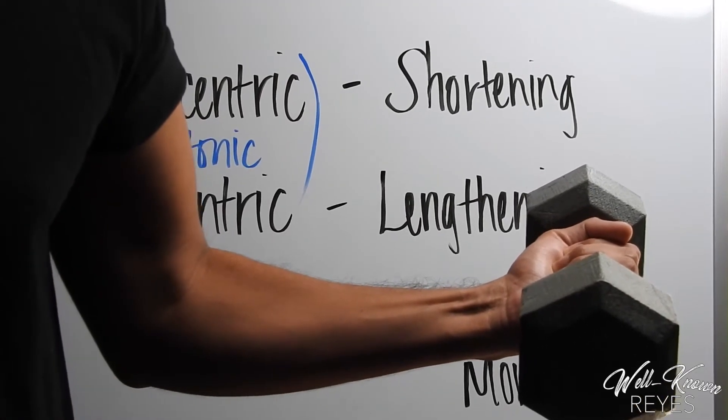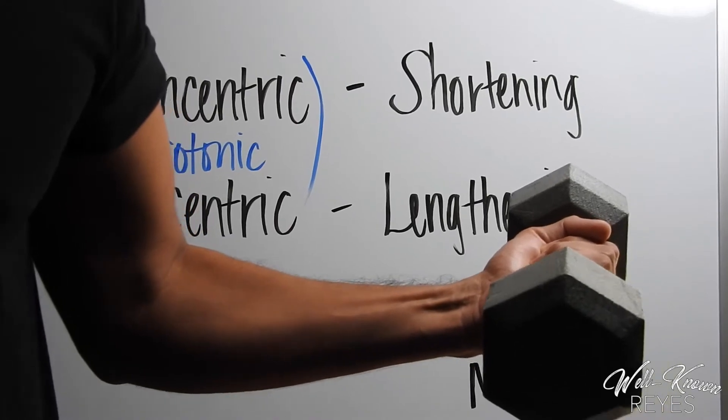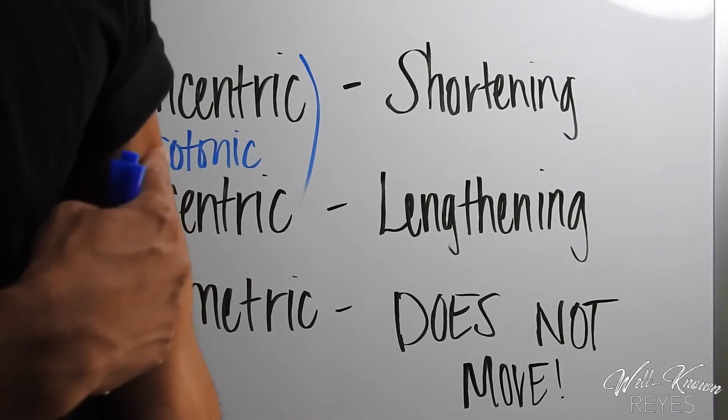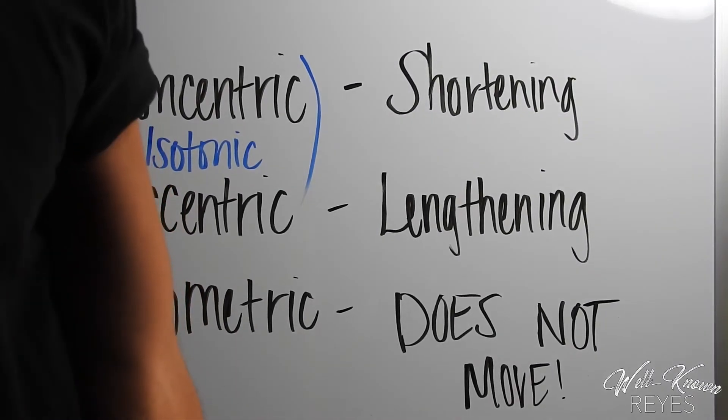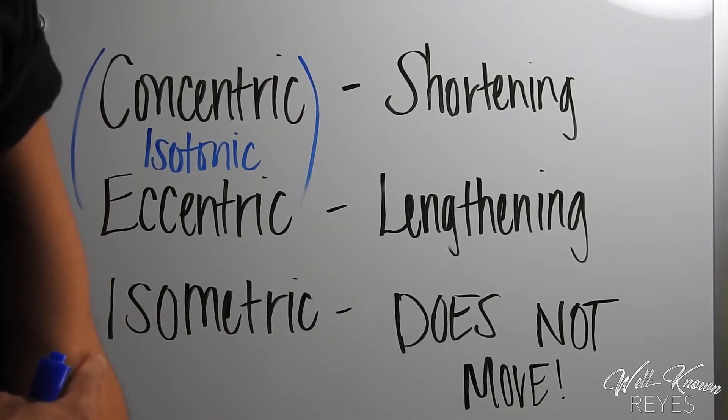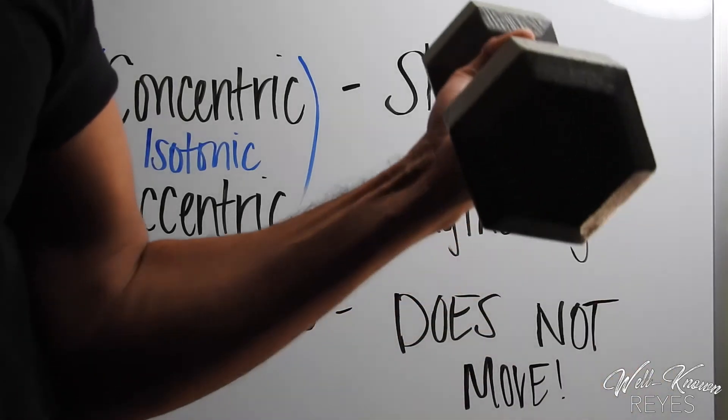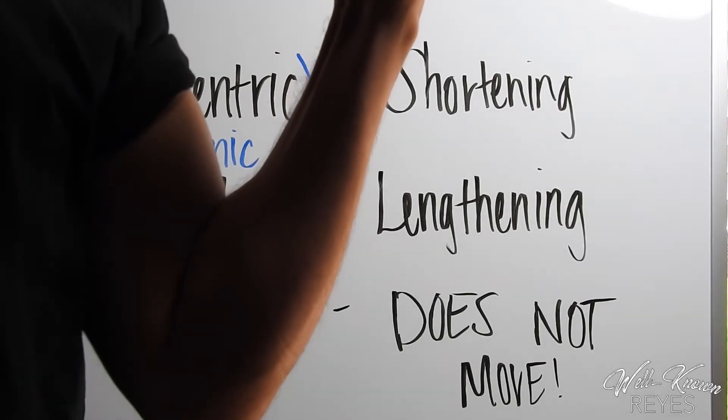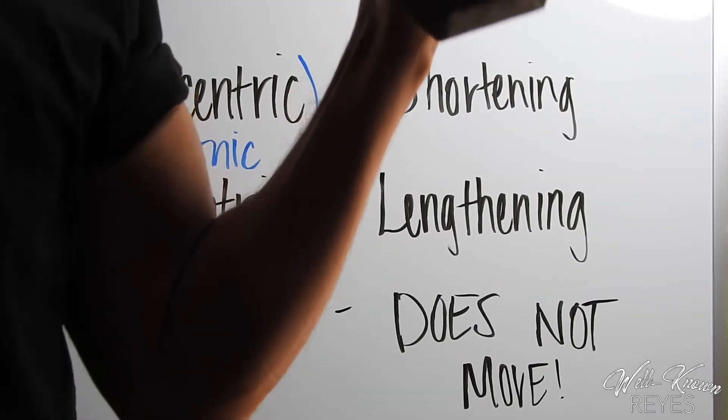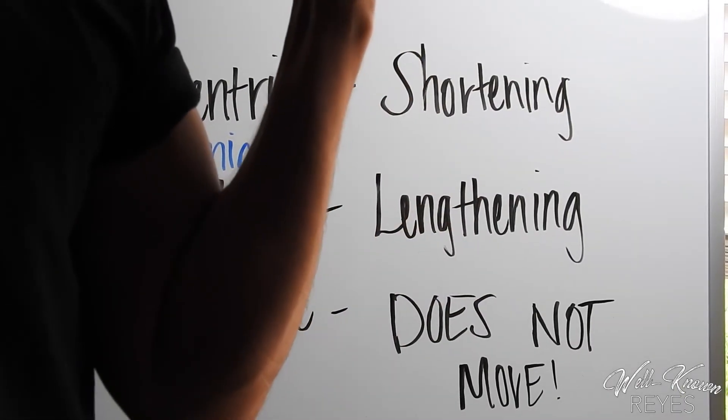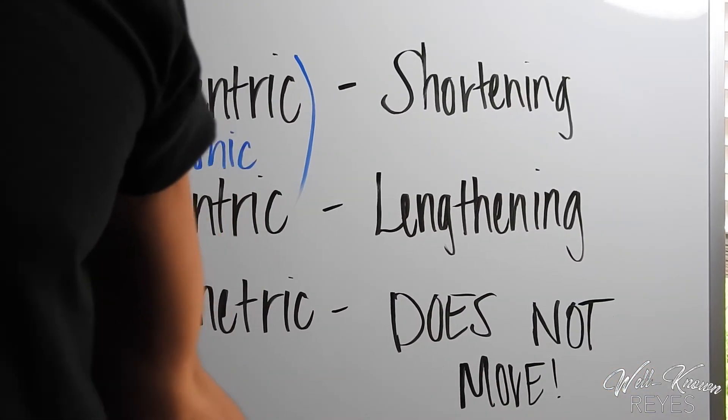Now when I do this, what is that contraction? What did my muscle fibers do? They lengthened. So that is an eccentric contraction. Now let's do a concentric contraction. This is my muscle fibers shortening in the bicep. That is a concentric contraction. And when I do eccentric and concentric, both of those together, it is an isotonic contraction.